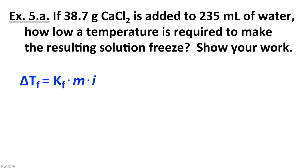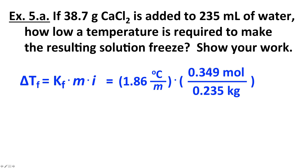The K sub F value — the freezing point constant for water — is 1.86 degrees Celsius per molal. Molality equals moles of solute divided by kilograms of solvent. The 38.7 grams of calcium chloride works out to 0.349 moles. 235 milliliters of water is approximately 0.235 kilograms. Calcium chloride dissociates into three pieces, so its Van't Hoff factor i is three. Doing the calculation, the units of molality cancel to leave degrees Celsius, and we get 8.29 degrees Celsius.